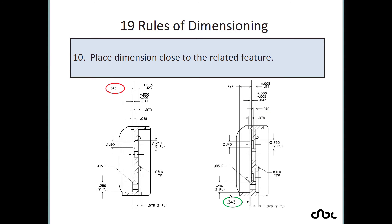Rule number 10: place dimensions close to the related features. For example, a dimension of 0.343 belongs to a particular feature — instead of placing it far away, place it nearby that feature. Try to place all dimensions close to the particular feature they describe.